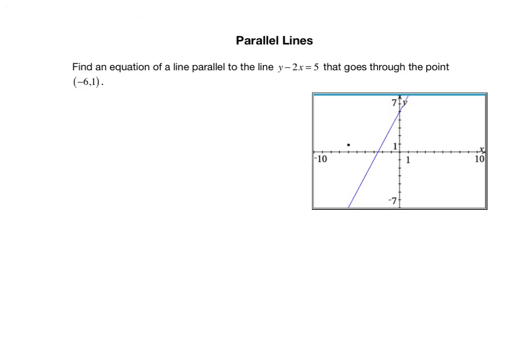Let's try another problem involving parallel lines. We want to find an equation of a line that's parallel to the line y - 2x = 5 that goes through the point (-6, 1). So we need to find the equation of a line. In the previous example, you were given two equations and you're asked, are these two lines parallel? Now we have one equation and we have one point. And we need to find a line that goes through this point that's parallel to this line here. This line is y - 2x = 5, and this point right here is (-6, 1).